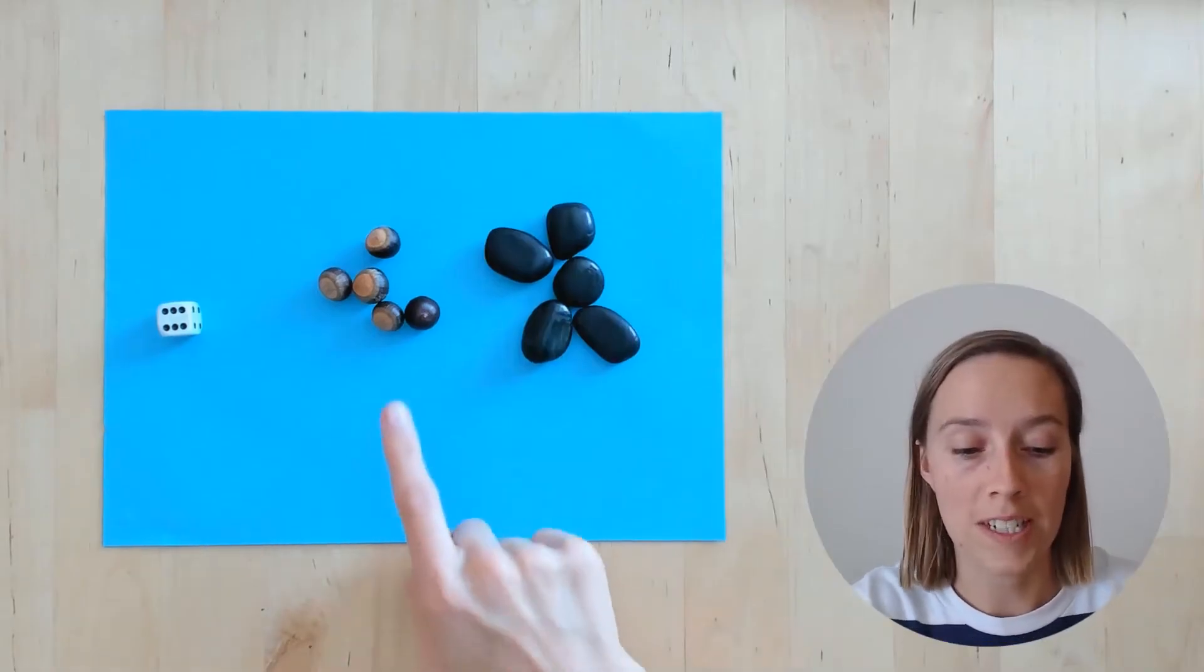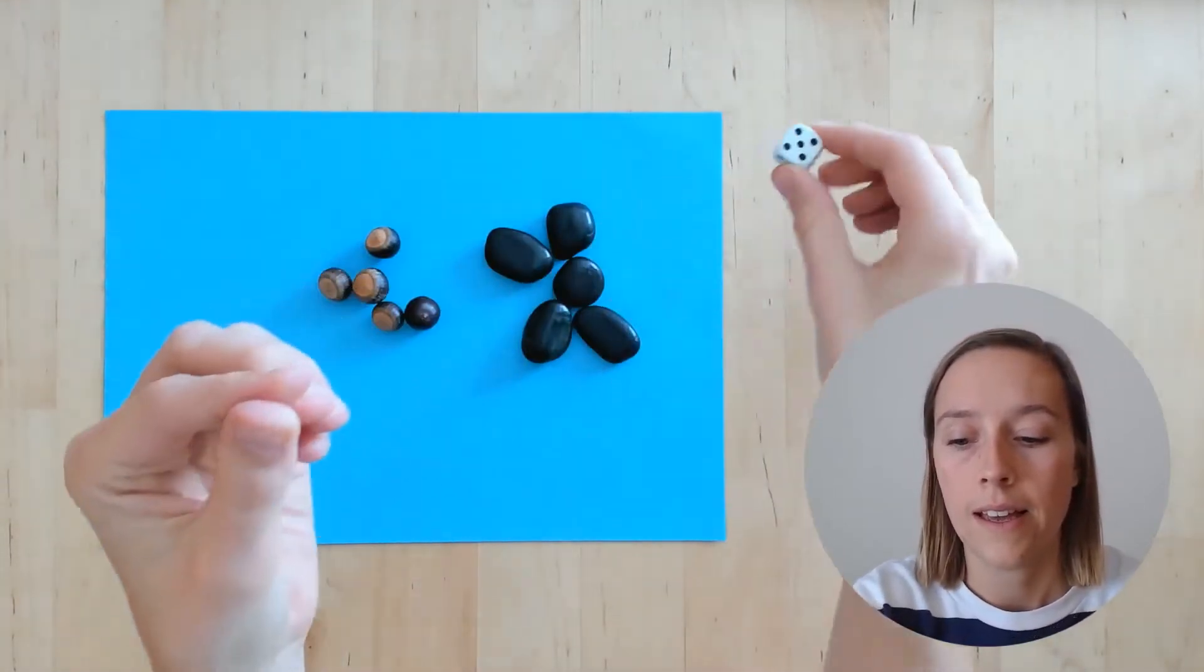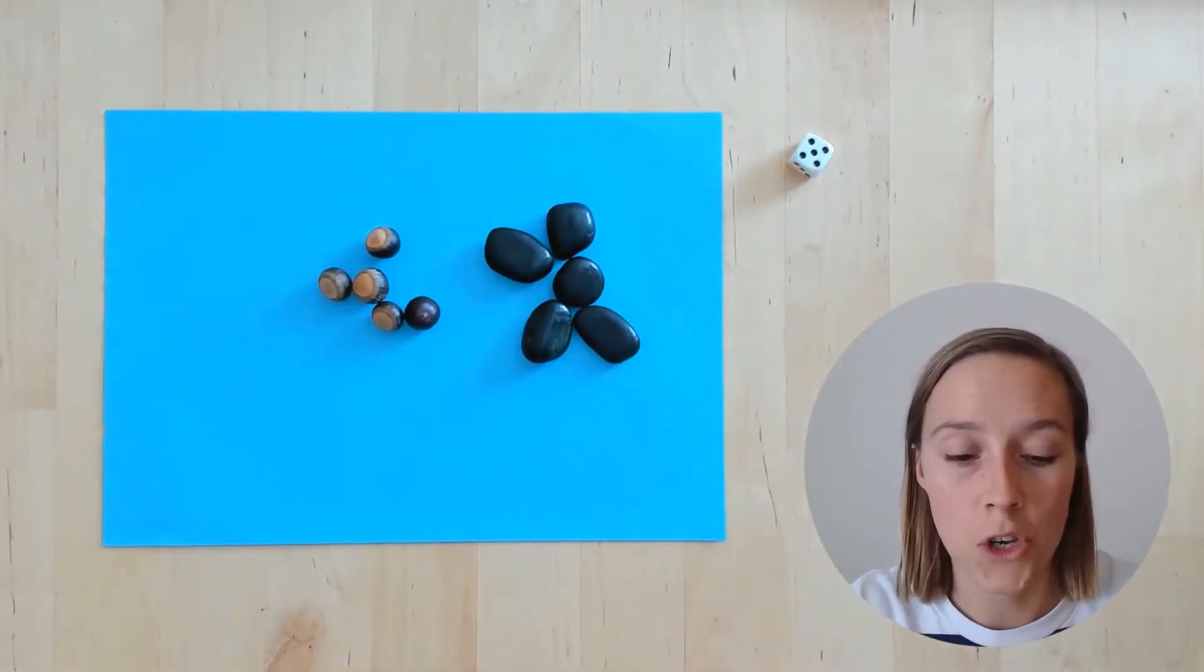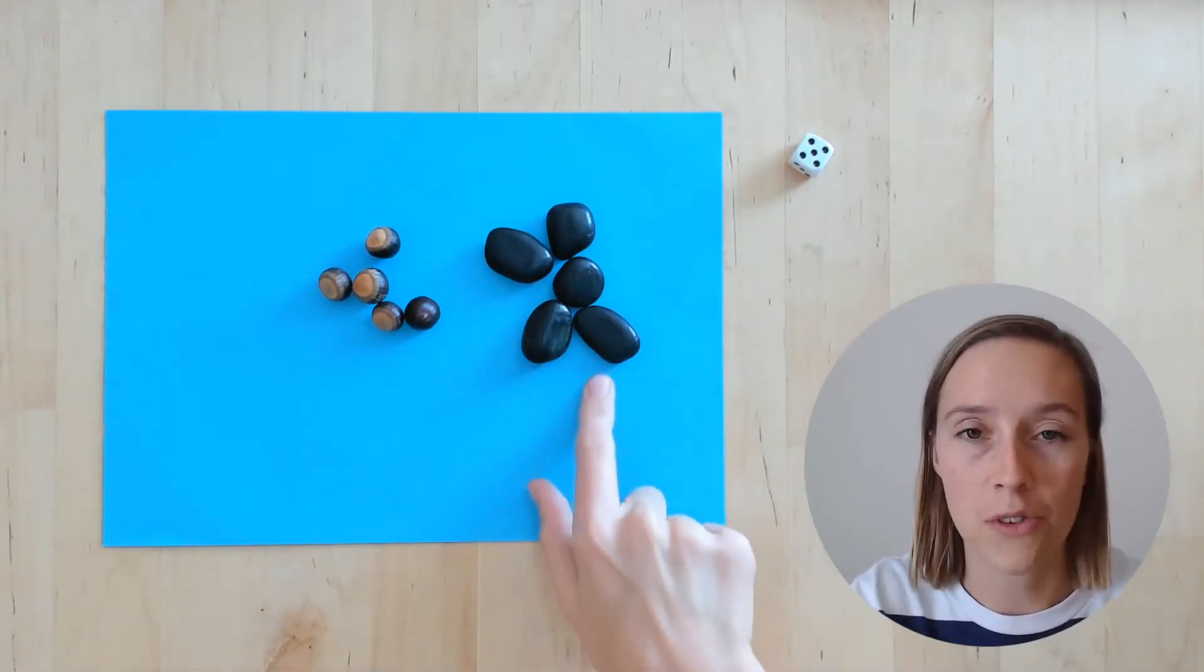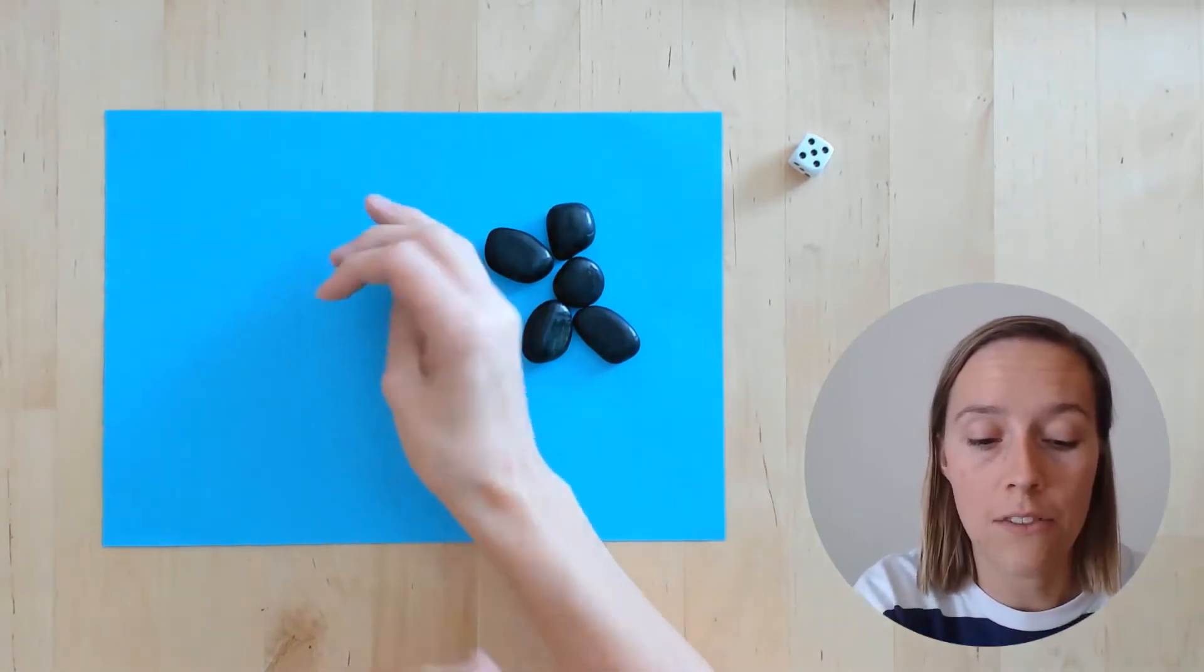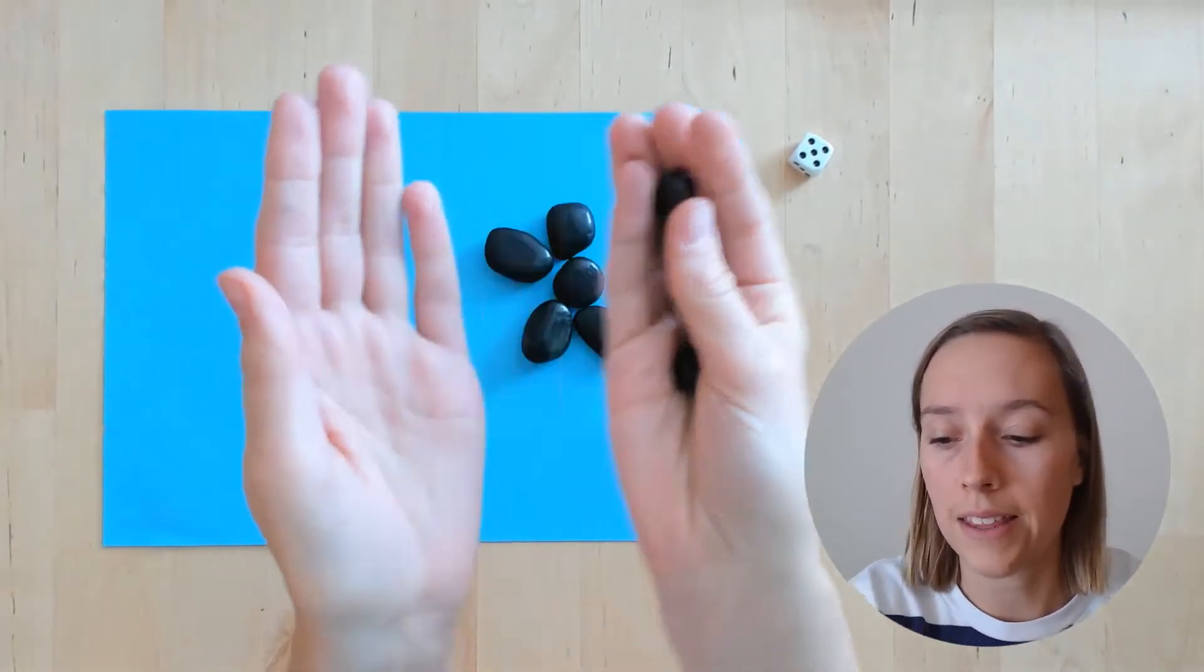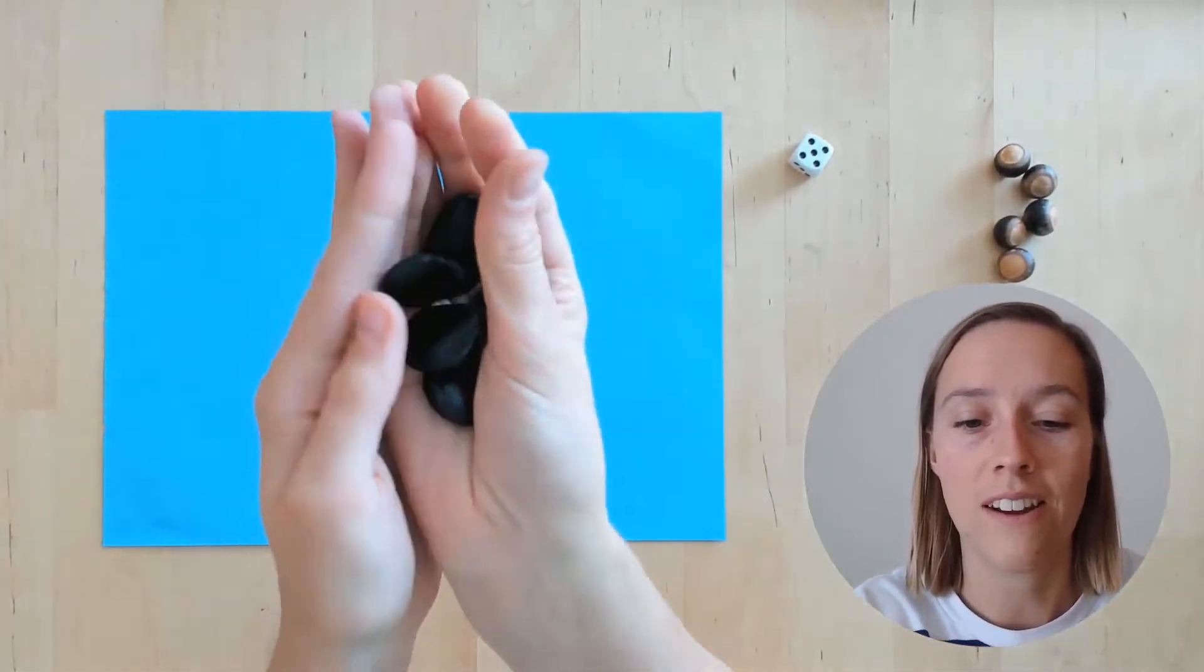To be able to play this game you're going to need a piece of paper, a dice, and some counters. You'll need two different kinds and five of each kind. You could use Lego or blocks or anything you have around the house. I've used some acorns that I collected the other day and some little black rocks that I really like.